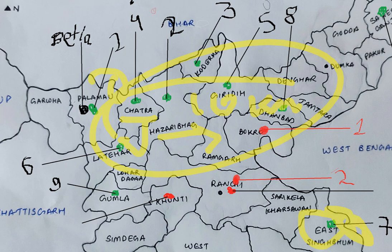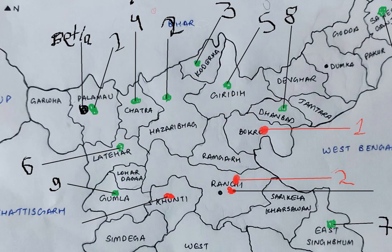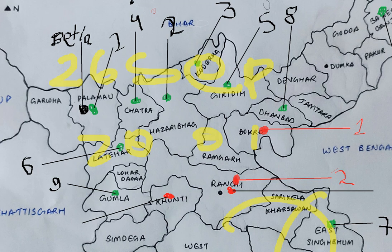An important point: Singhbhum Elephant Reserve was established on 26 September 2001. India's first elephant project was established in Dalma. This area is 13,440 square kilometers covering East and West Singhbhum and Saraikela-Kharsawan districts, reserved for wild elephant conservation.